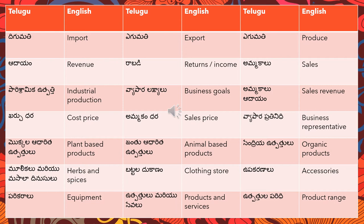'Upakaranalu' means accessories. 'Parikaralu' means equipment — whatever equipment you need for an industry or factory. 'Utpattulu mariyu sevalu' means products and services — 'mariyu' means 'and.' I'll do another video covering joining words and phrases. 'Utpattula paridhi' means product range — for example, we have a wide product range.